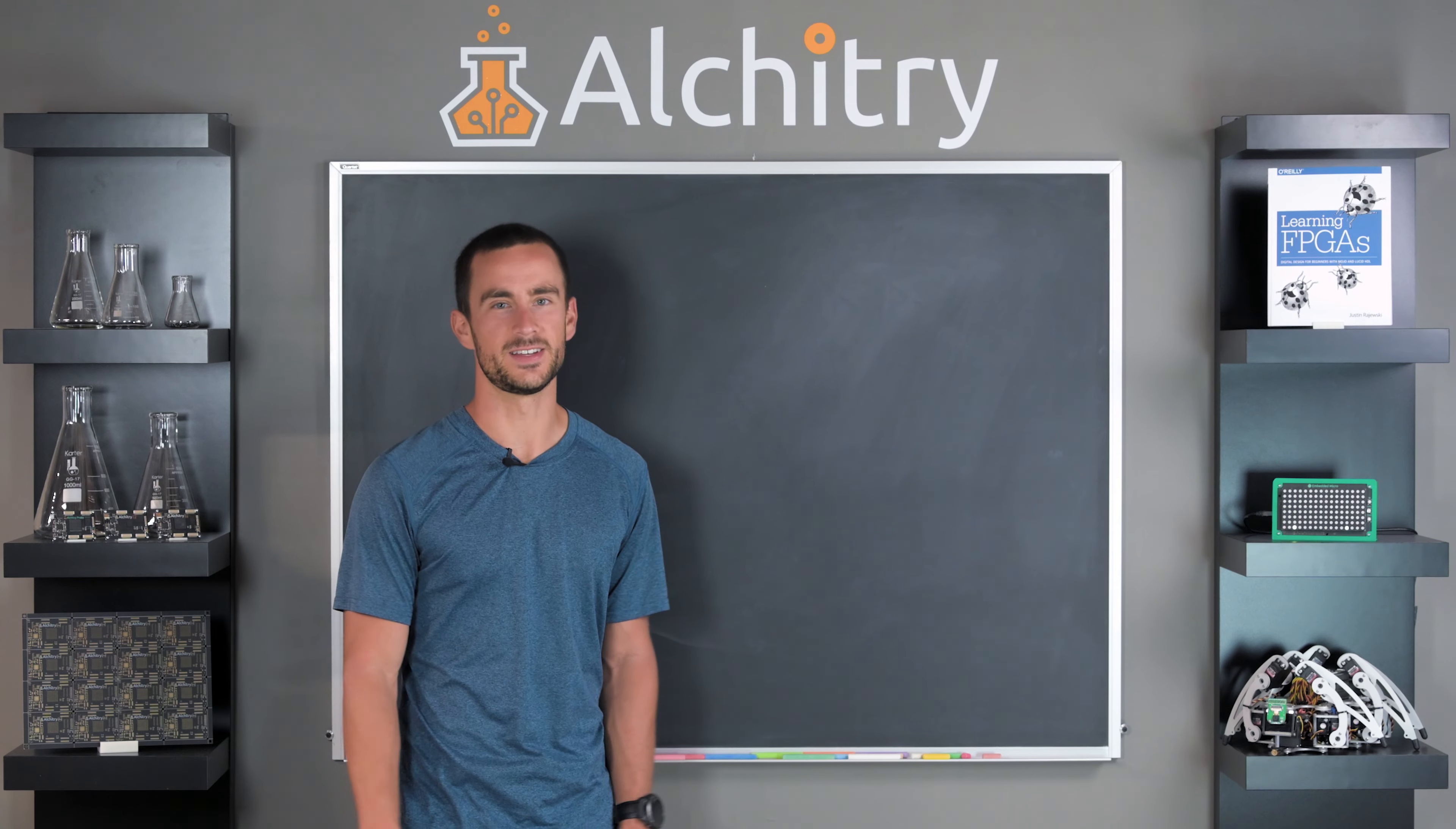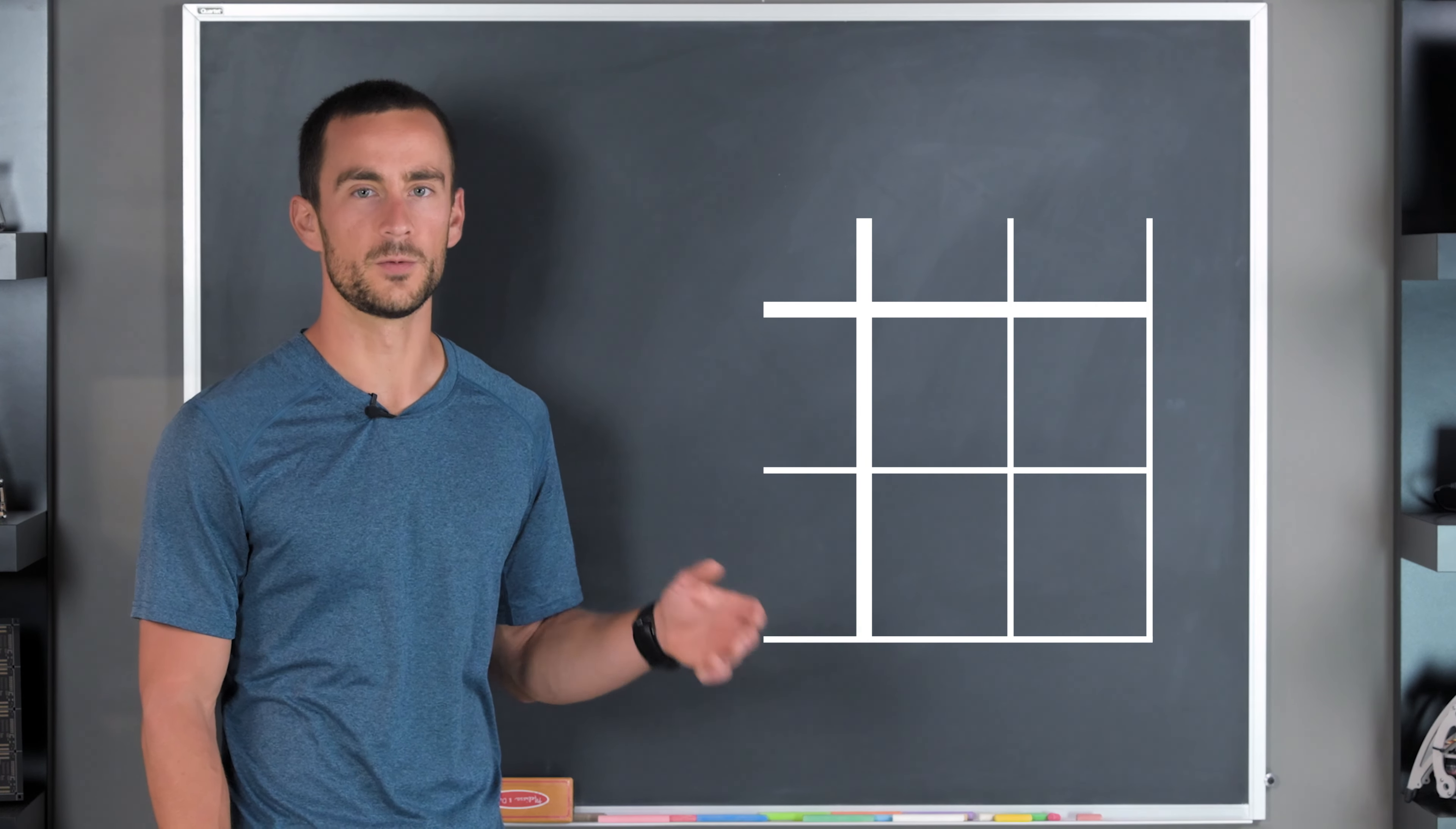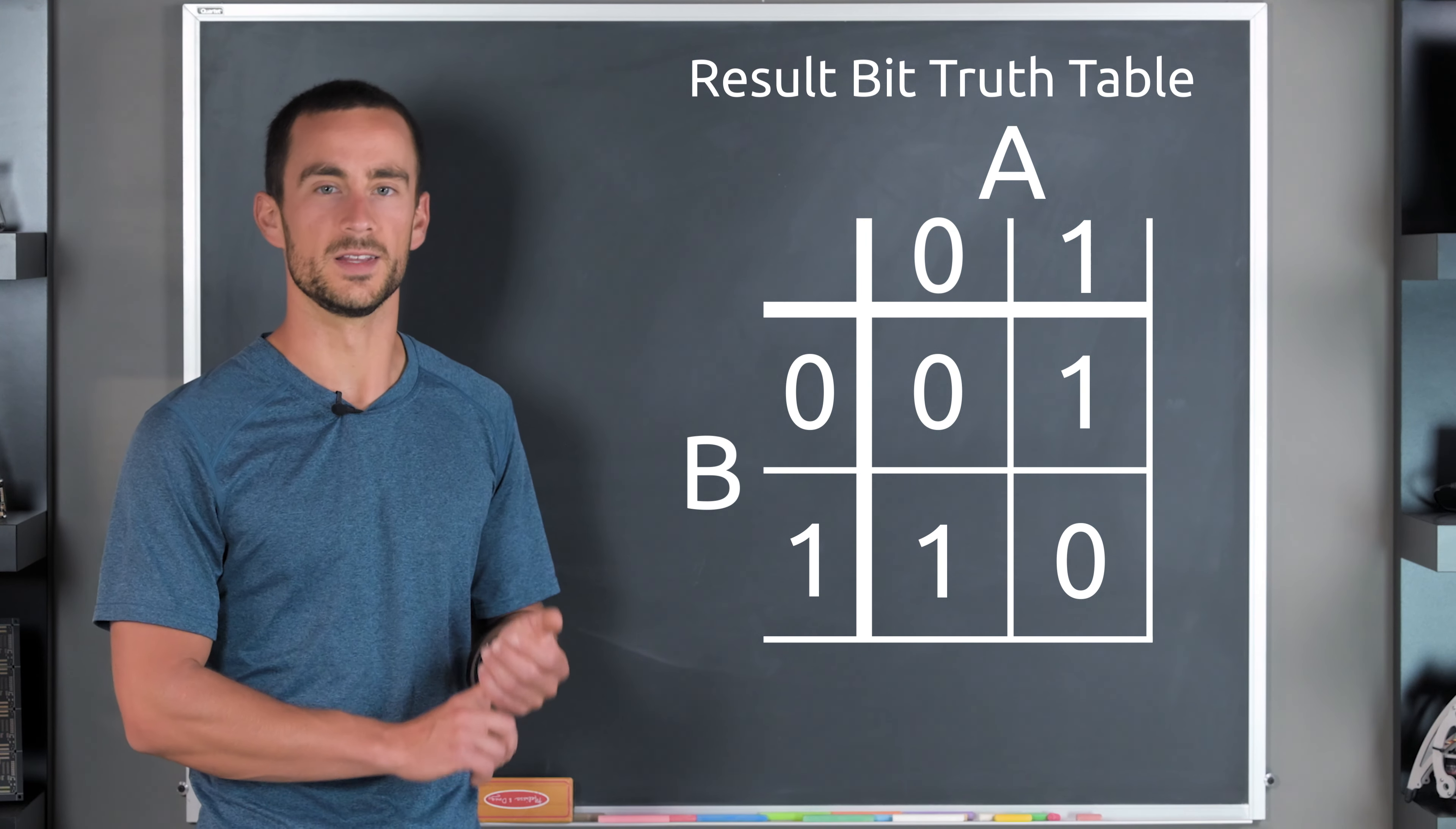Doing all this by hand was pretty tedious, so let's make a circuit that can do it all for us. First, we can fill out a truth table to get an idea of what the circuit will need to do. Just like we did when we were adding by hand, we will look at each column at a time. So for the first column, we have two inputs, which are the two numbers, and we have one output, which is the result bit. Okay, looking at the truth table, it's obvious that this could be implemented with an exclusive OR gate, since the result bit is only 1 when the inputs are different.